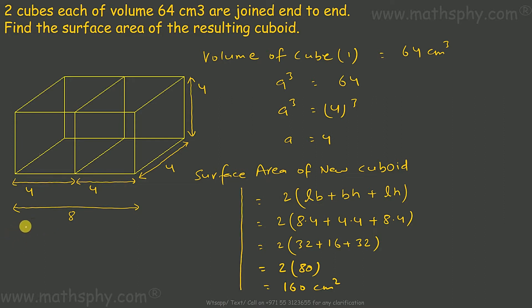Total surface area, TSA of cube is 6a². 6 into a² where a is 4, so 6 times 16. This gives you 96 cm².